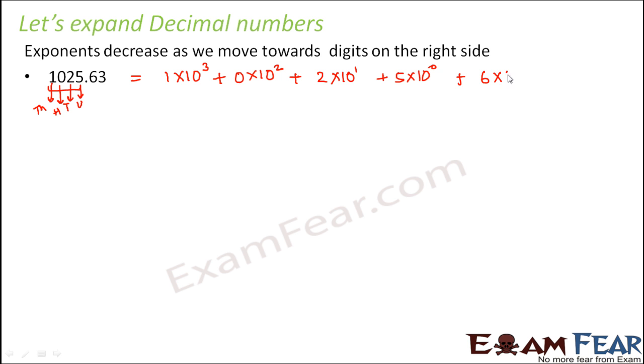So this becomes 6×10⁻¹. After 0 you would have minus 1. Then you have 3×10⁻². So gradually as you keep moving on the right side, after the decimal point, the fractional part that you have, for that you make use of the negative exponents. This is where negative exponents are useful.